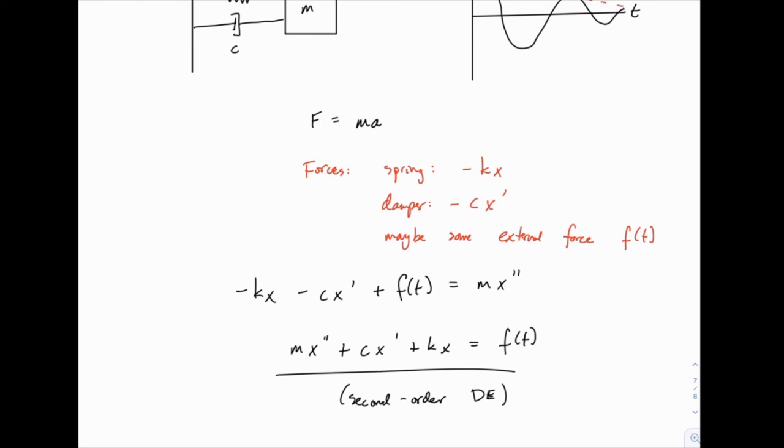In a given problem like this, m, c, and k would all be given to us. We would know the mass of the object, we would know the spring constant, we would know the damper constant, and if there's some external force we would have a way of measuring that as well. And then we could solve using some of the methods we'll learn when we learn how to solve second-order equations.